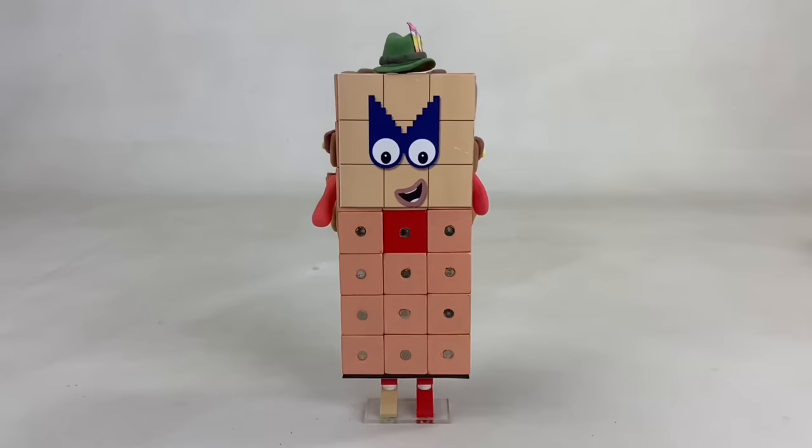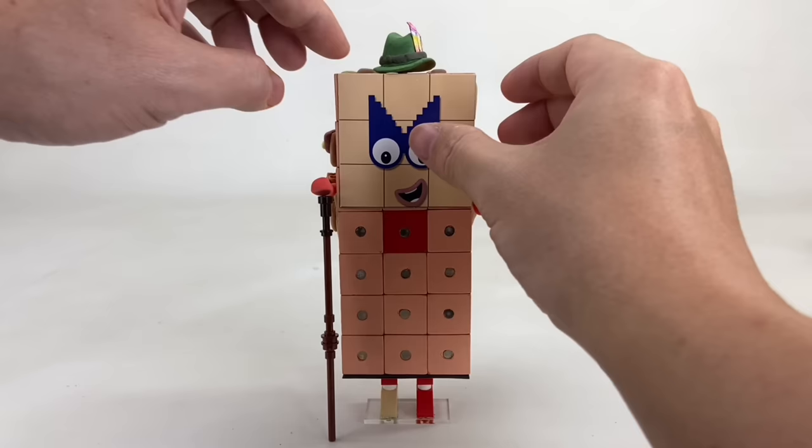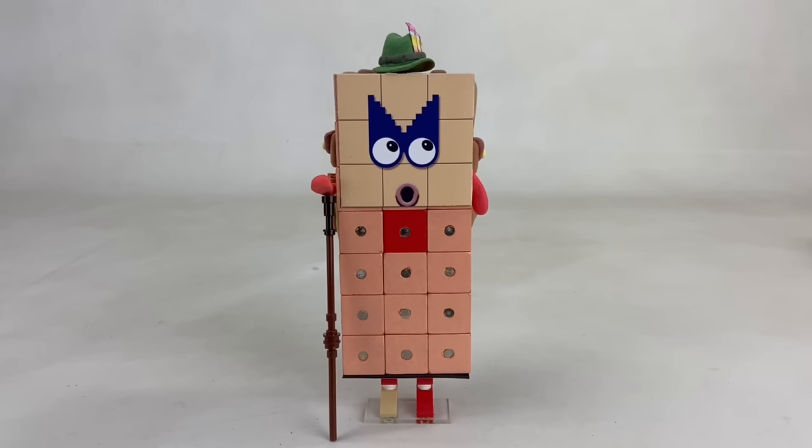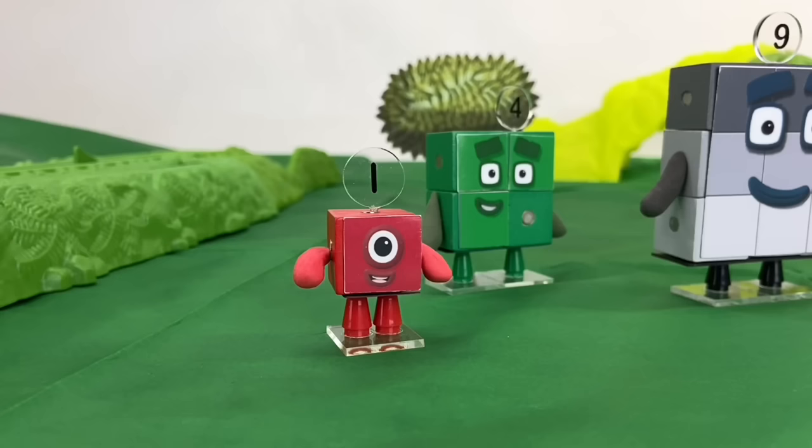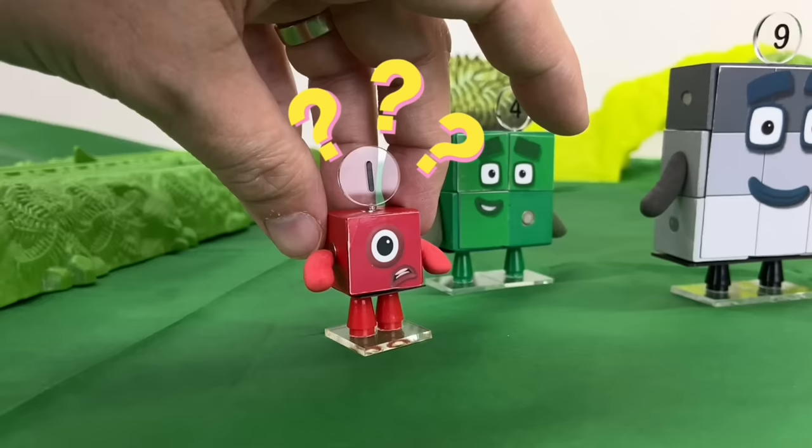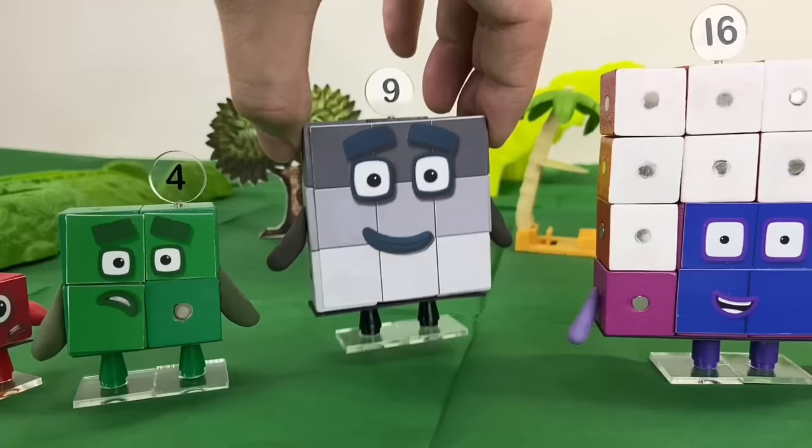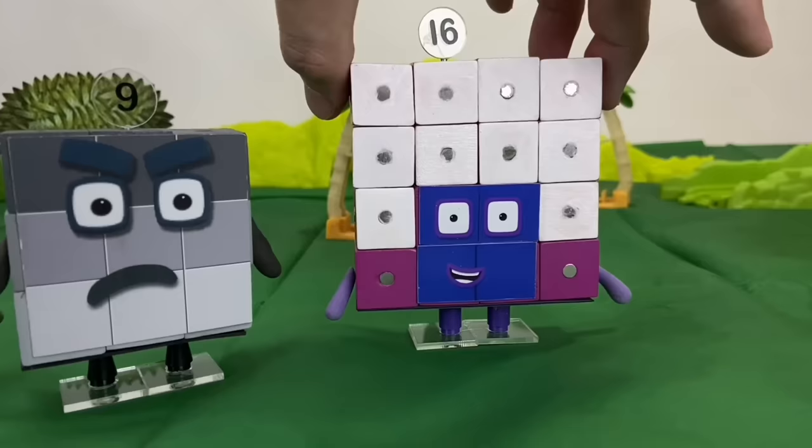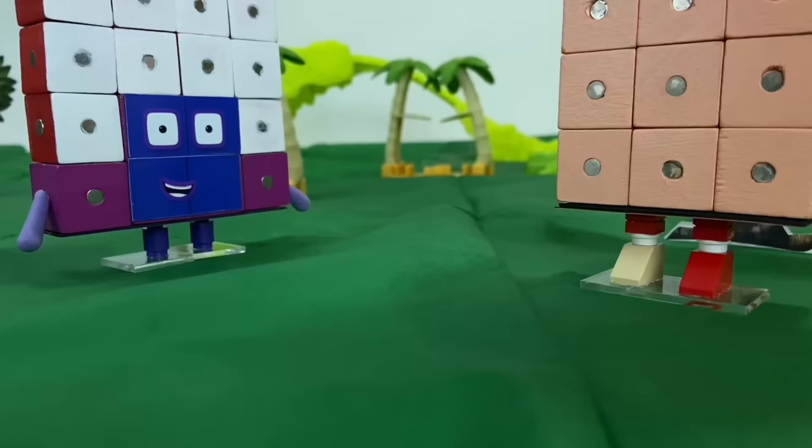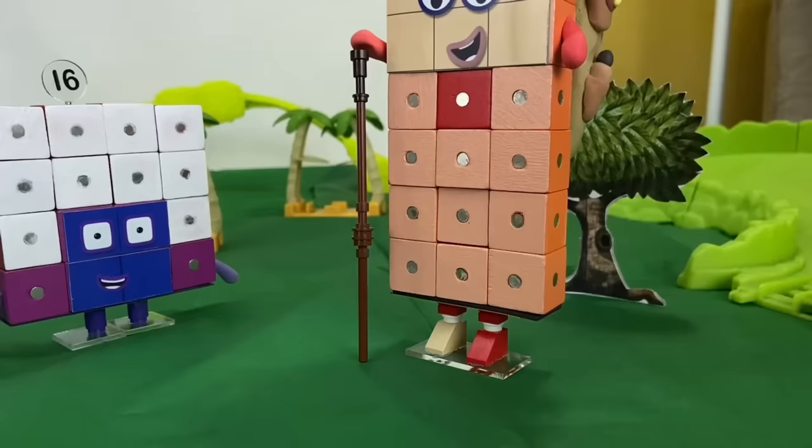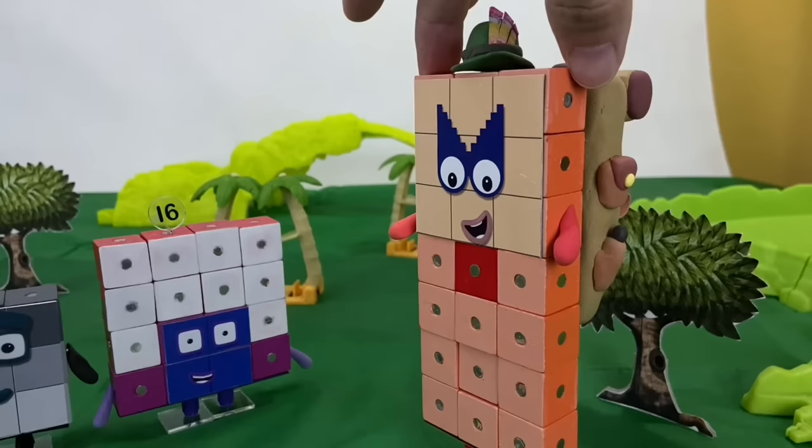We printed several facial expressions on magnetic sheets, so you can change her expressions anytime and tell different stories. Here's a surprised face and an angry face. Oh no, I think we're lost. Yeah, we're going around in circles, and I don't like circles. What are we gonna do now? Don't worry. I know who can help us. Squares, meet Number Block 21.